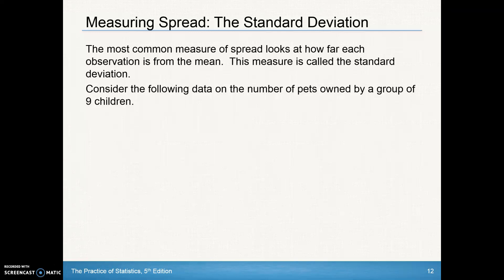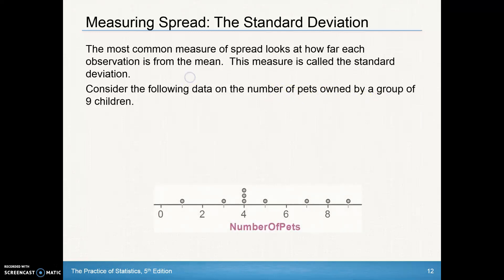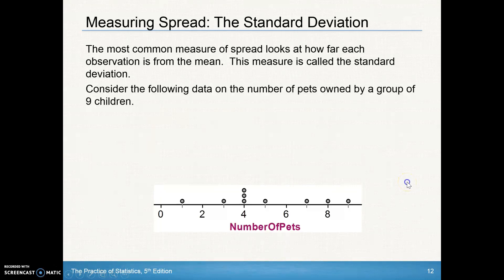Let's start with some data sets and use that to illustrate how to calculate standard deviation. We've got data on the number of pets owned by a group of nine children. One child has one pet, another has three pets, three children have four pets each, there's a child with five pets, and one child has nine pets. We'll use this to calculate the standard deviation.